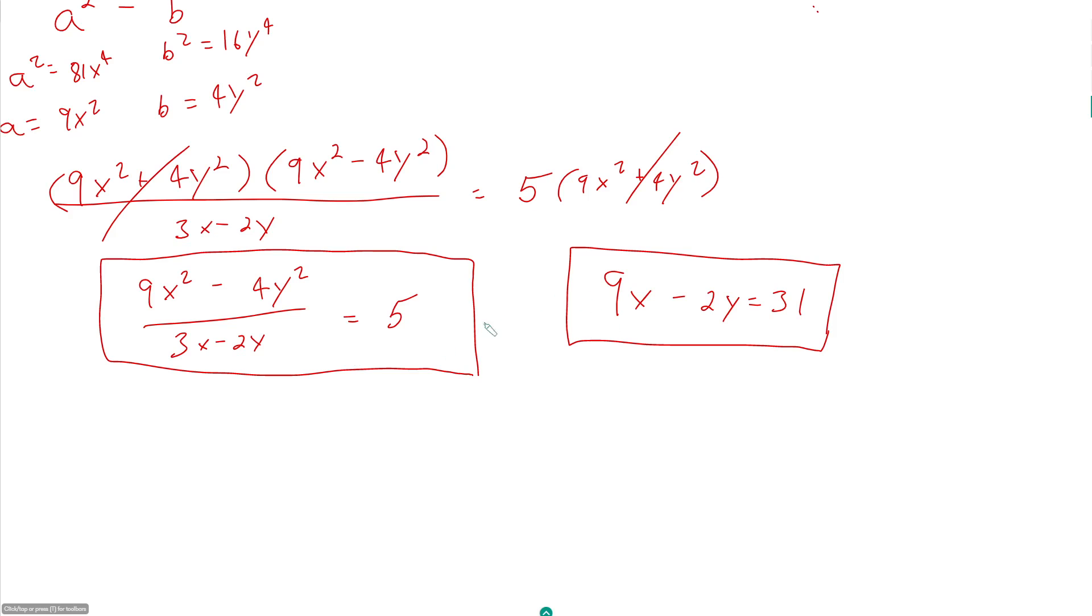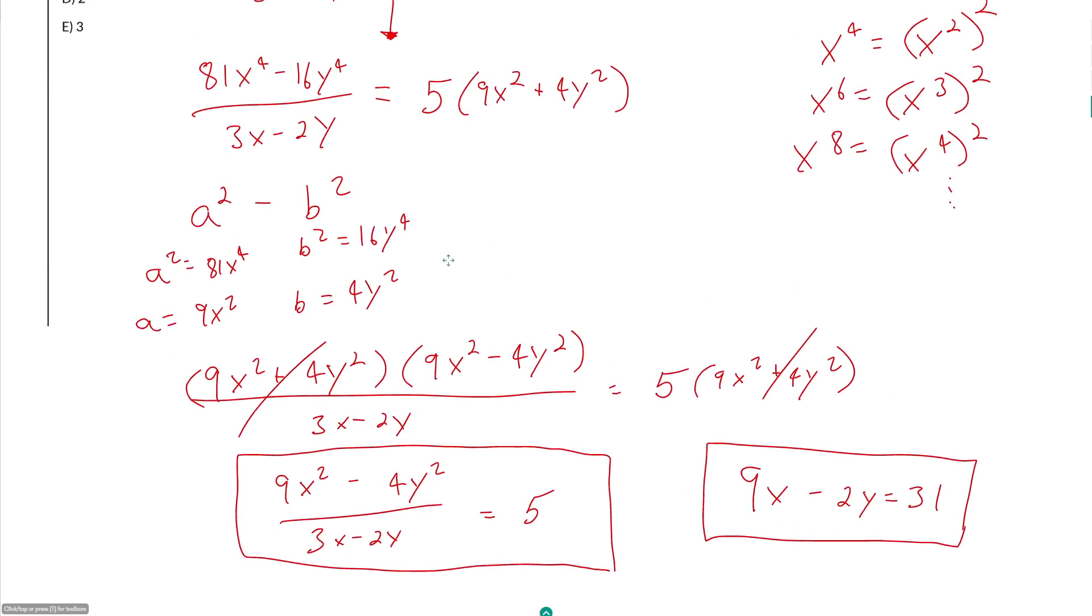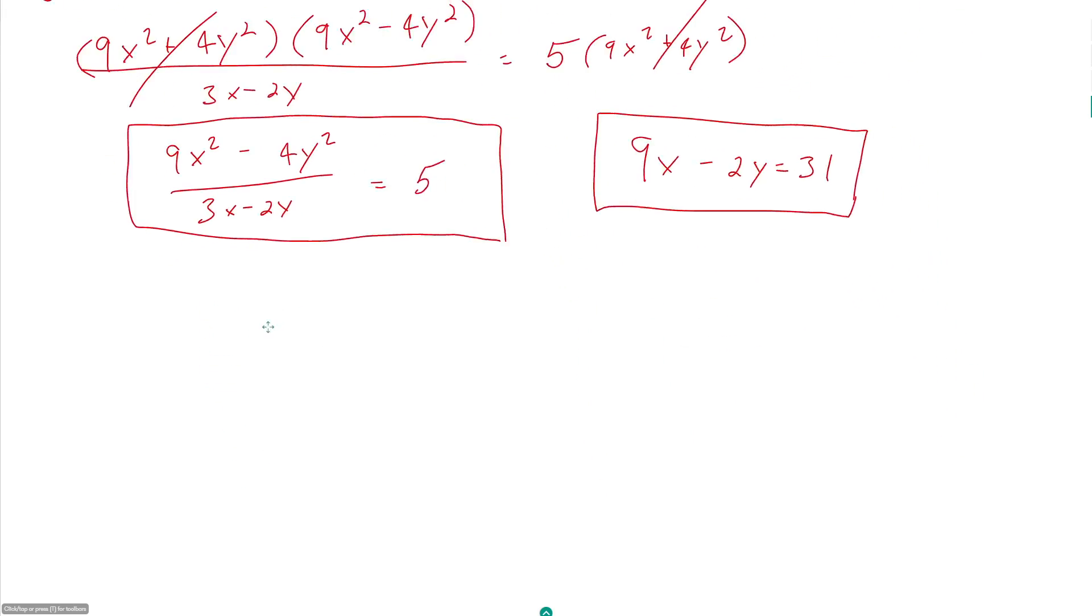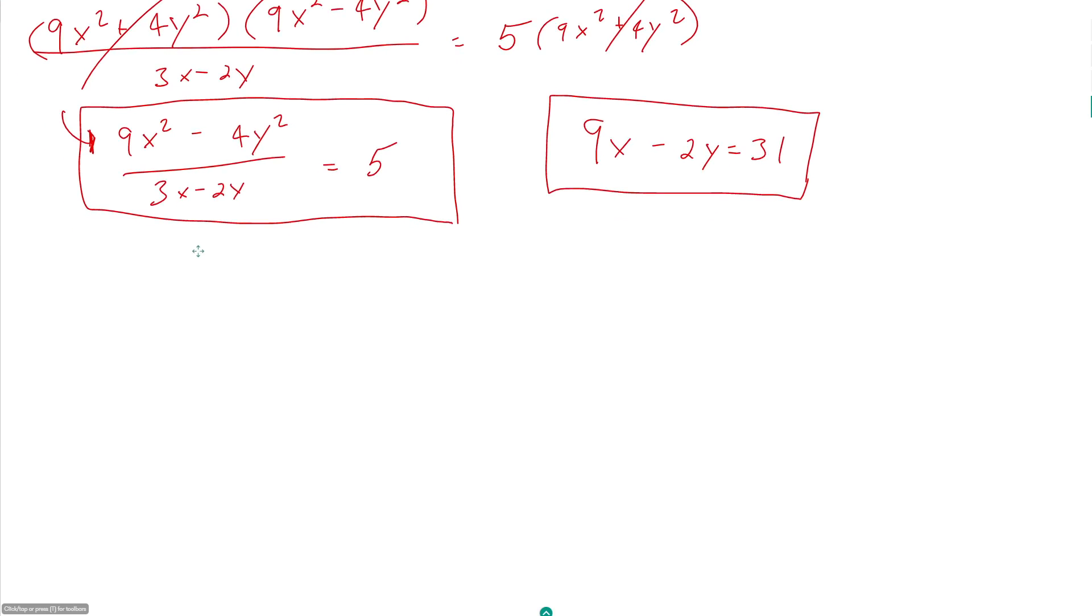And so this is the important thing about recognizing when you have difference of squares with powers greater than 2. Oftentimes, when you have that, you can do difference of squares twice. So look at what we have here. We have 9x squared minus 4y squared, which is a perfectly nice looking difference of squares again.